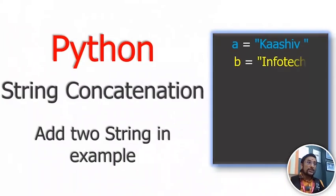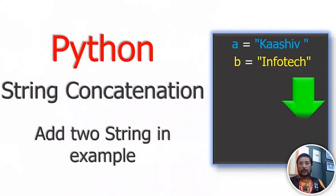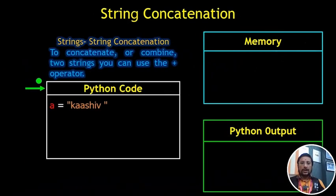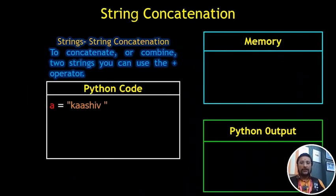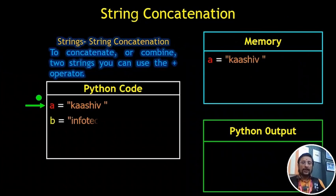Let's see how we can merge strings. A is equal to 'Kashiw' — there is a space. You can store the same variable in memory. B is equal to 'InfoTech'.